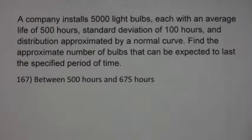A company installs 5,000 light bulbs, each with an average life of 500 hours, a standard deviation of 100 hours, and a distribution approximated by a normal curve. Find the approximate number of bulbs that can be expected to last a specified number of times. I want it to be between 500 and 675 hours.